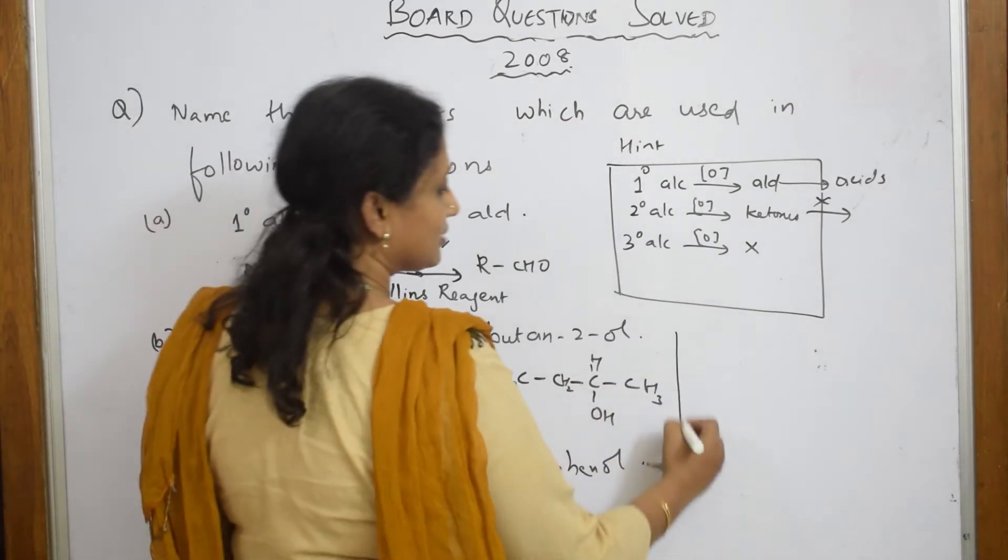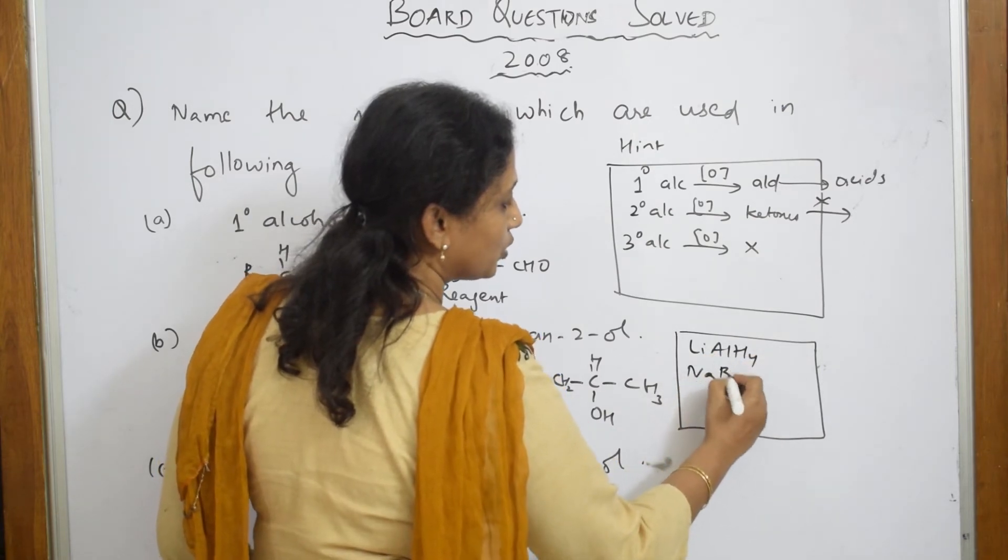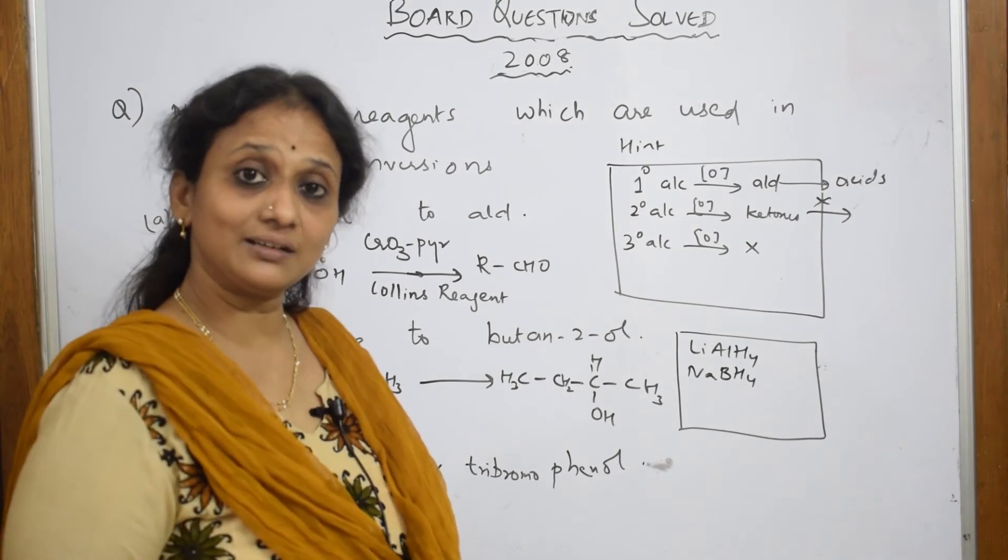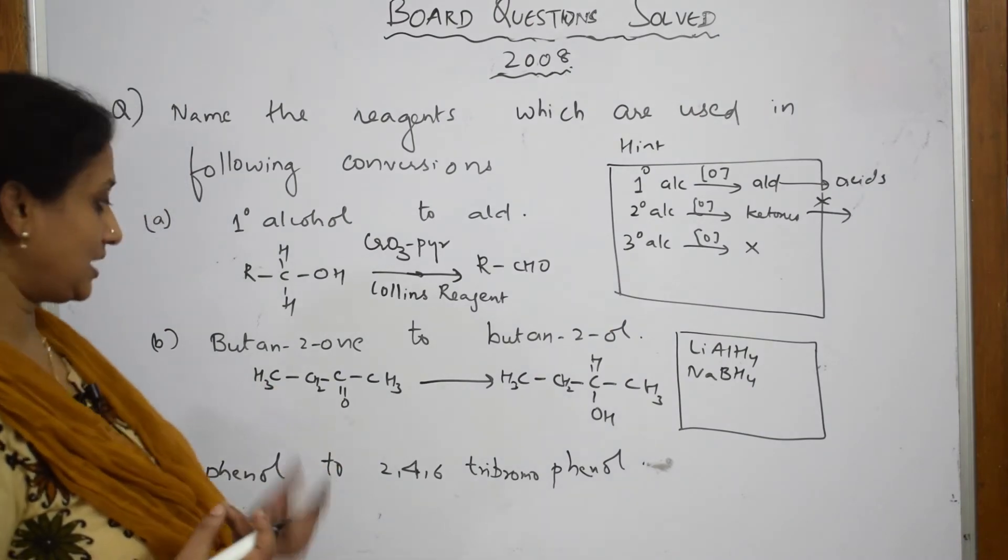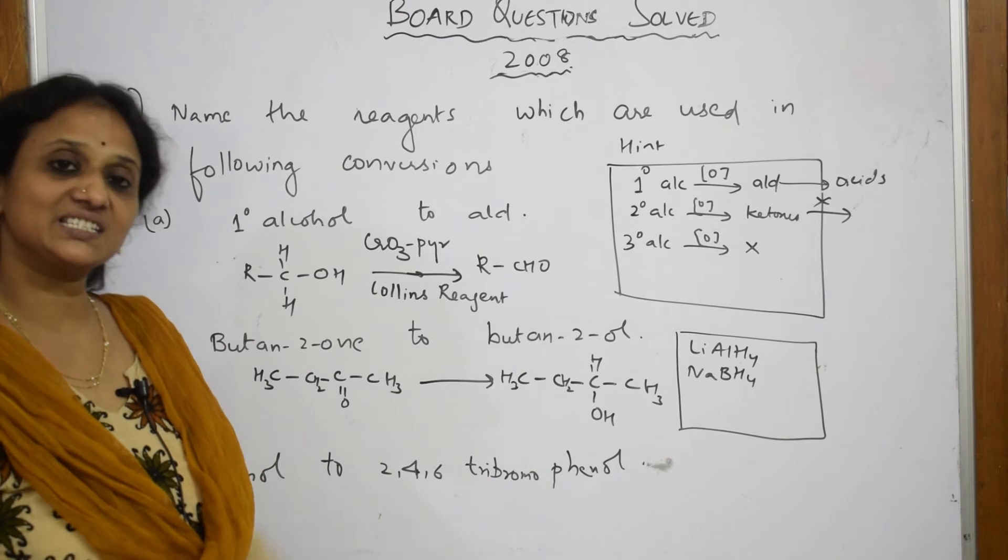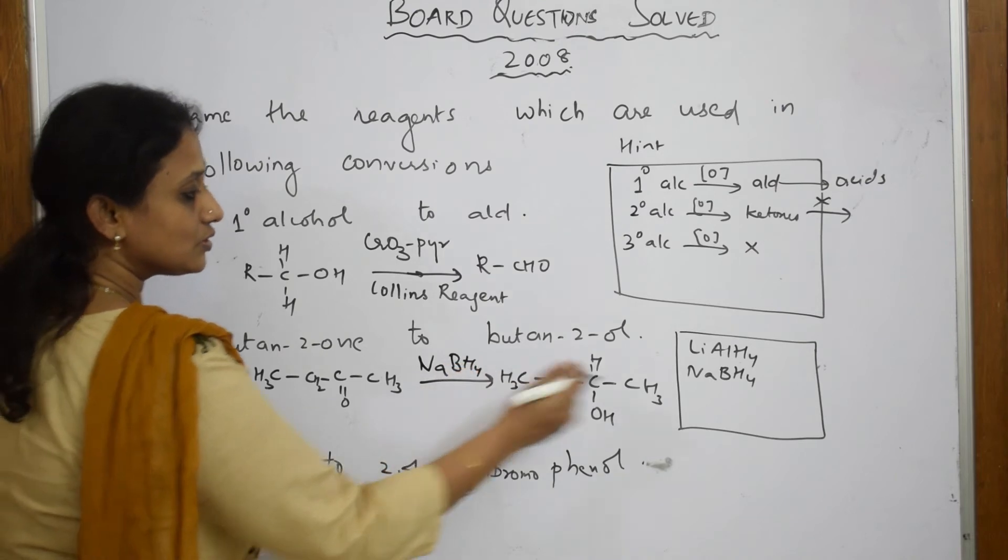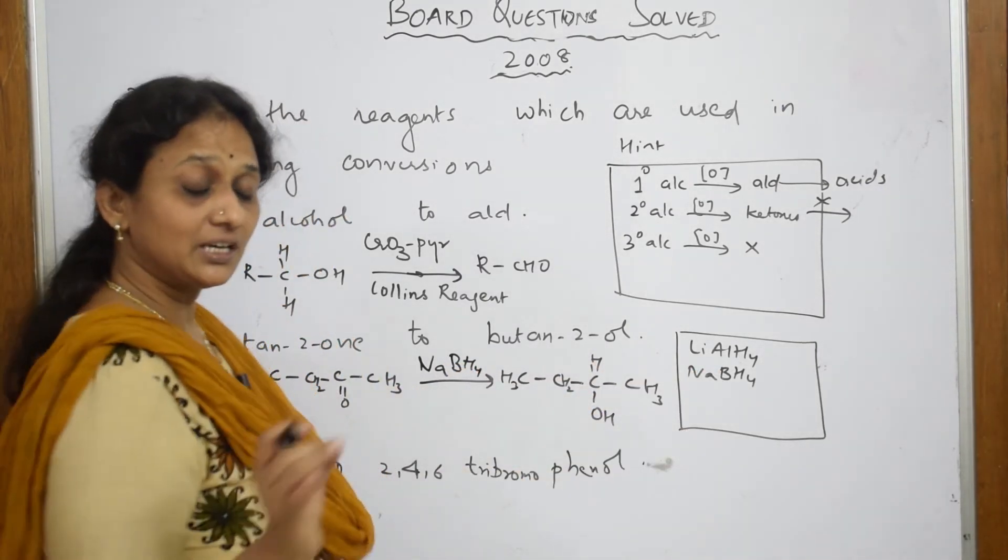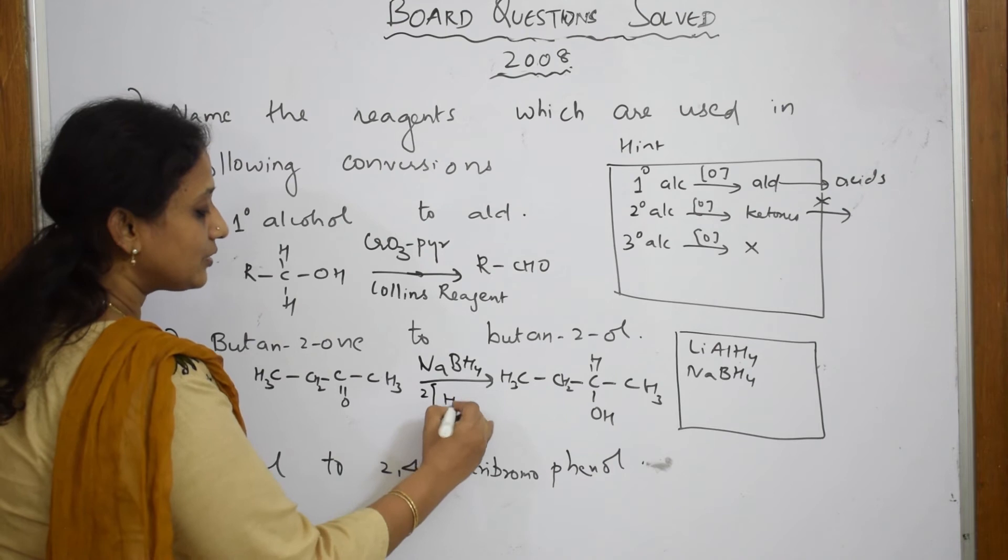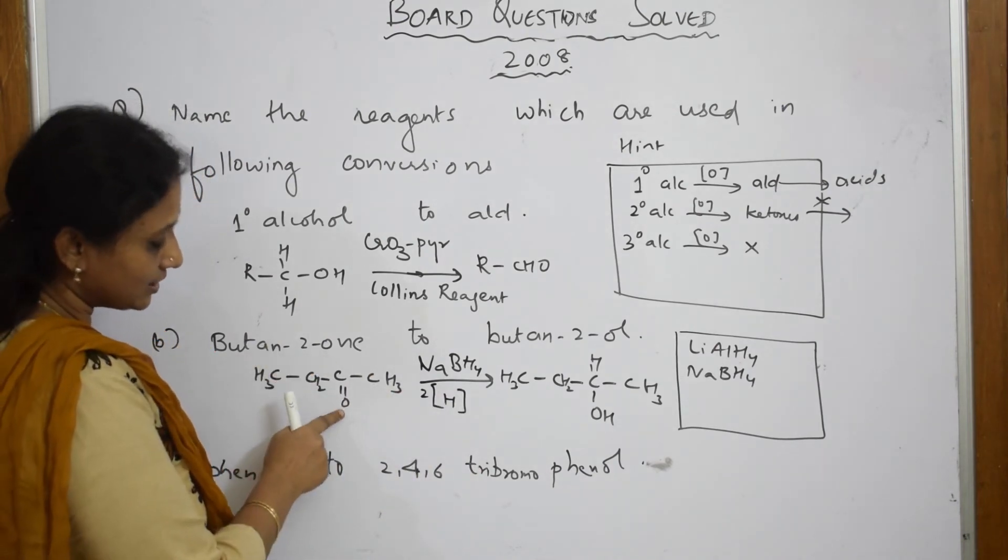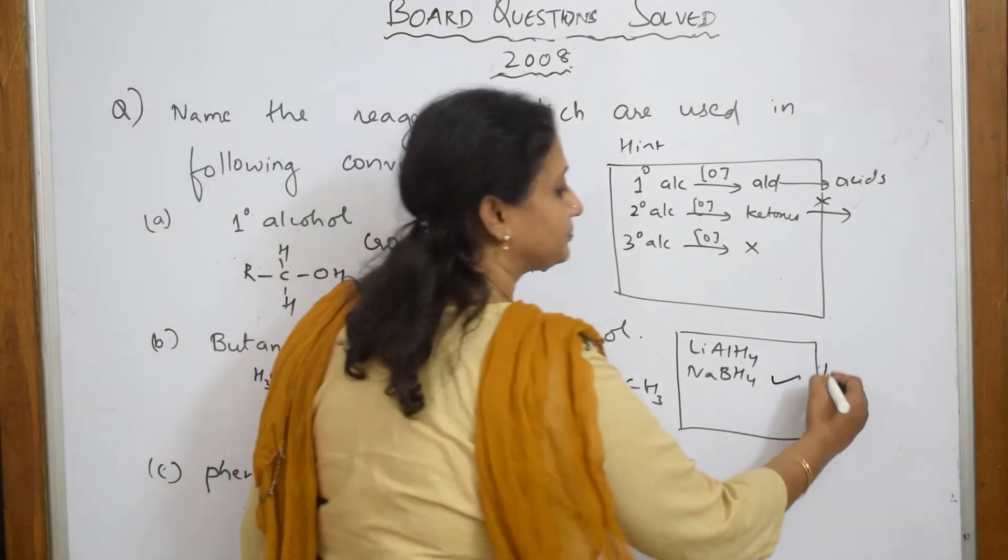We have already listed out reducing agents like lithium aluminium hydride, sodium borohydride, nickel, platinum. We have already given metals also act as reducing agents. Here if I say for ketone to get converted into secondary alcohol, the best reducing agent is sodium borohydride. Lithium also is fine, but sodium borohydride is specific because in your board they give you specific answers in the marking scheme. Sodium borohydride is going to add two hydrogens - one above here, one here - so you get a secondary alcohol.